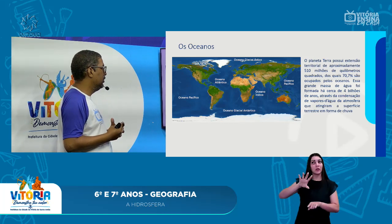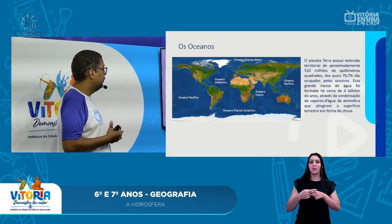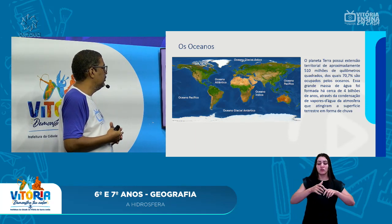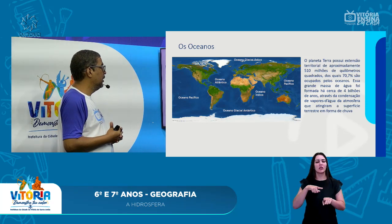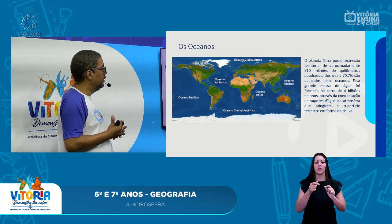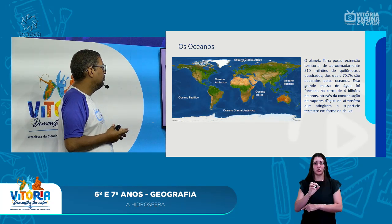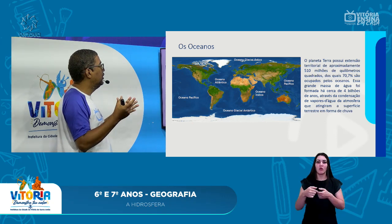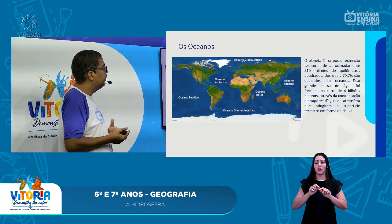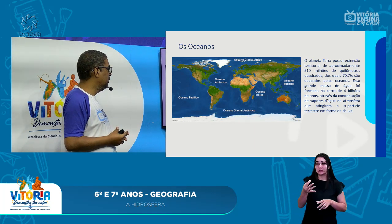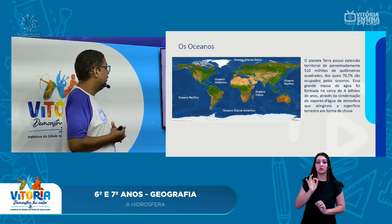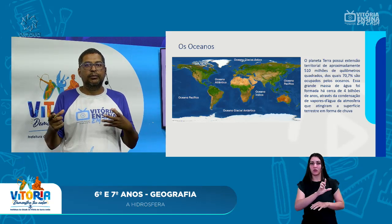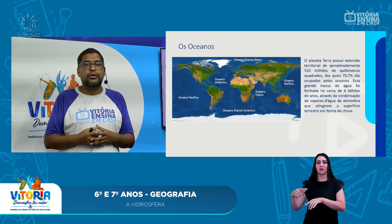O Oceano Atlântico é considerado um oceano bastante importante por ser uma importante rota de tráfego. Já o Oceano Pacífico é o maior oceano que temos no planeta, mas tem uma característica bastante peculiar: ele fica numa zona chamada de Círculo de Fogo do Pacífico, onde há bastante terremotos e vulcões — aquelas ondas gigantes de tsunami. Por isso é um oceano não muito atrativo para rotas marítimas, sendo bastante perigoso para a travessia.